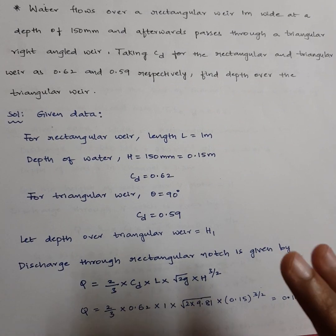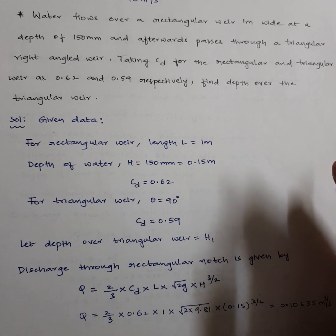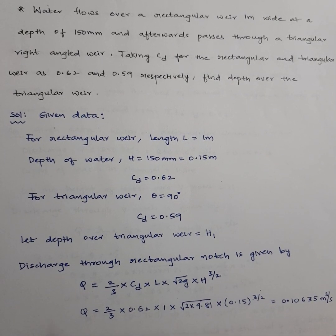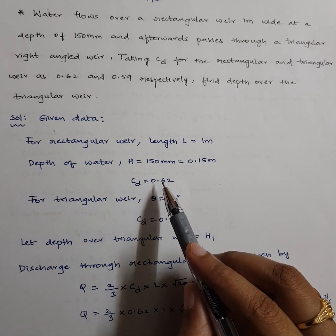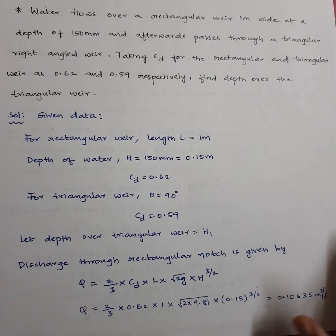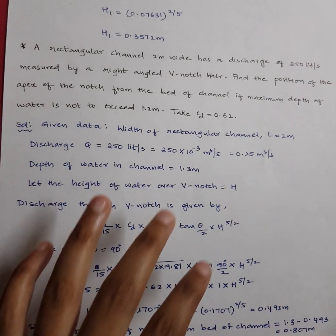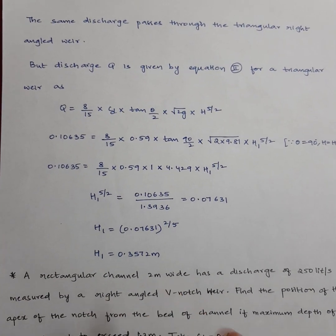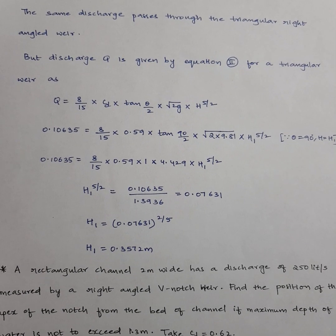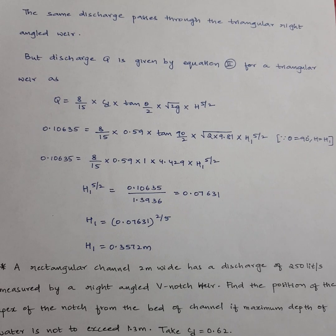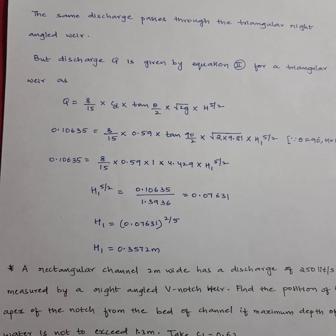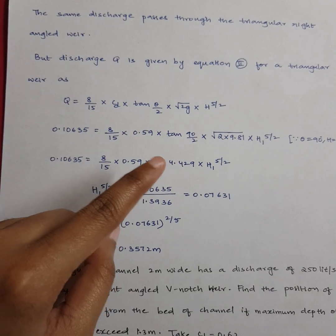First, calculate discharge through the rectangular notch using Q = (2/3)·CD·L·root(2g)·H^(3/2). Substituting: Q = (2/3) × 0.62 × 1 × root(2 × 9.81) × 0.15^(3/2) = 0.10635 m³/s. This discharge then flows directly into the triangular notch, so the same Q applies to the triangular notch.